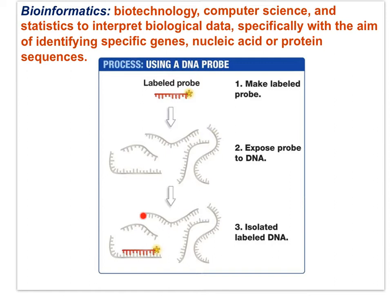The probe is labeled with a radioactive base, then mixed with the entire genome that is heated slightly to separate the two strands of DNA, and then cooled to allow the strands to form hydrogen bonds. The probe will hybridize with — or anneal to — the target gene. In this way, the target gene can be isolated.